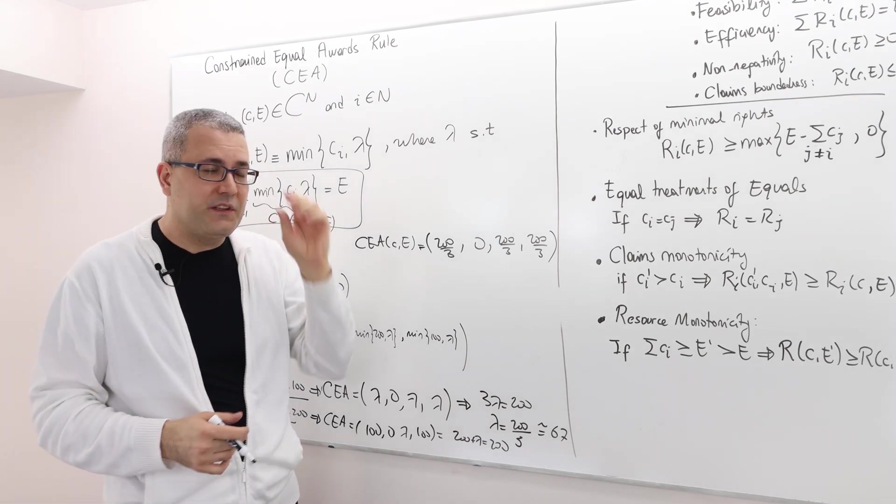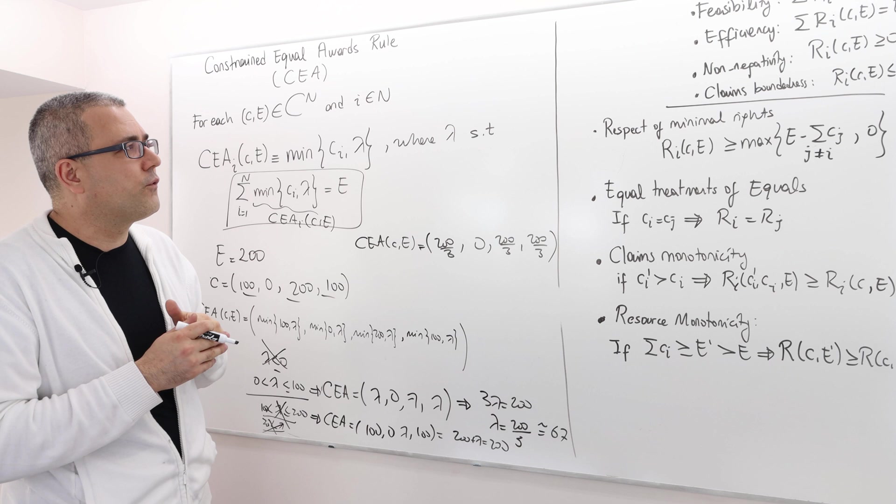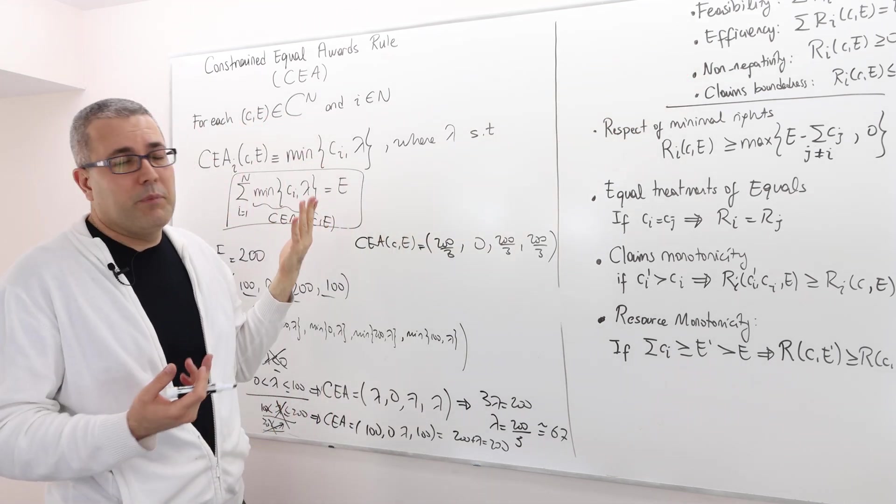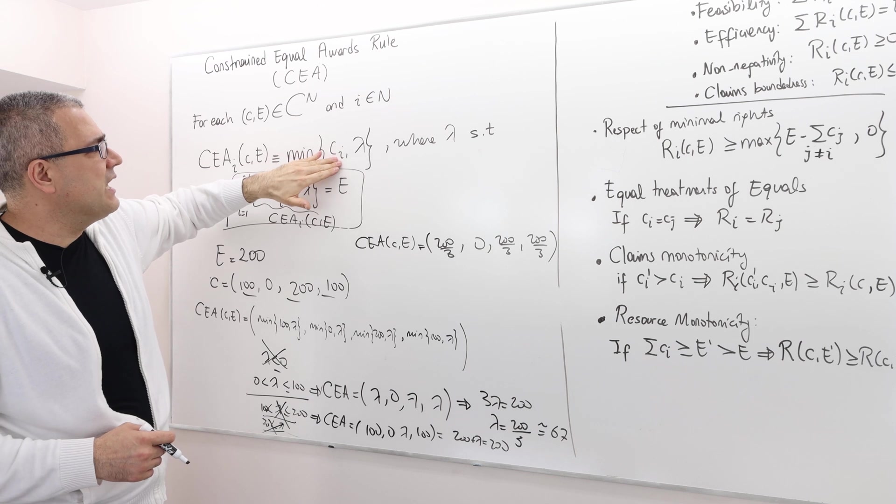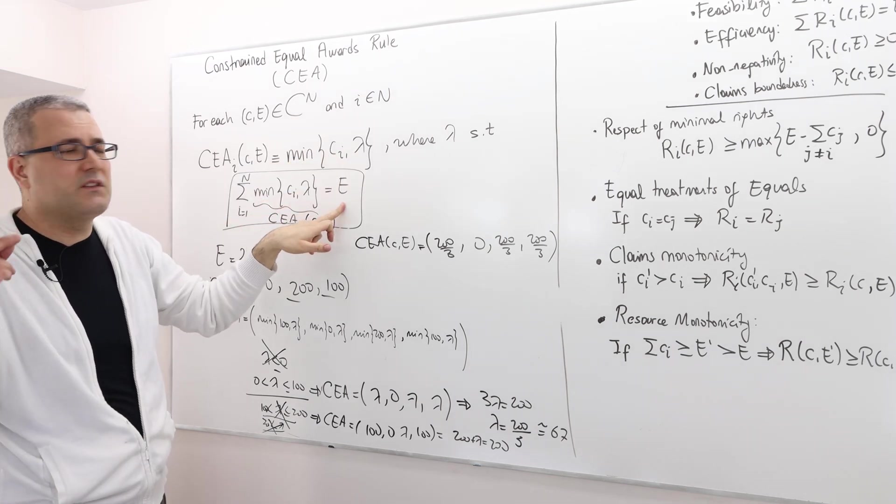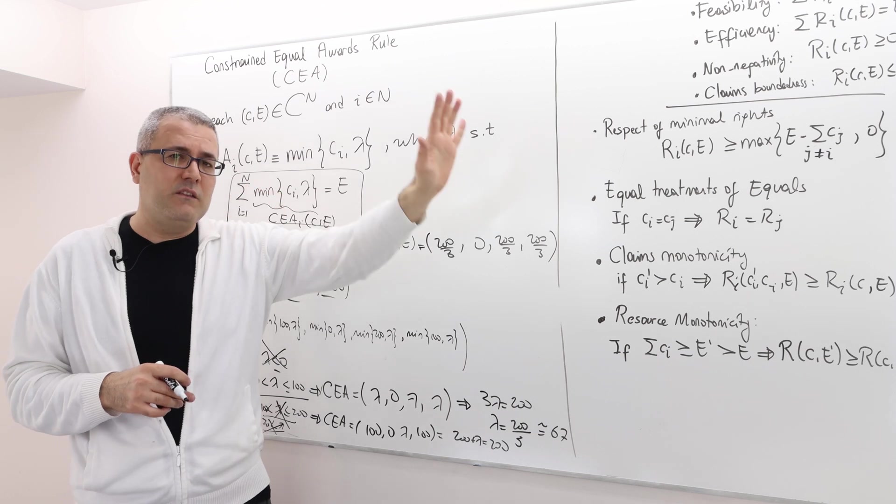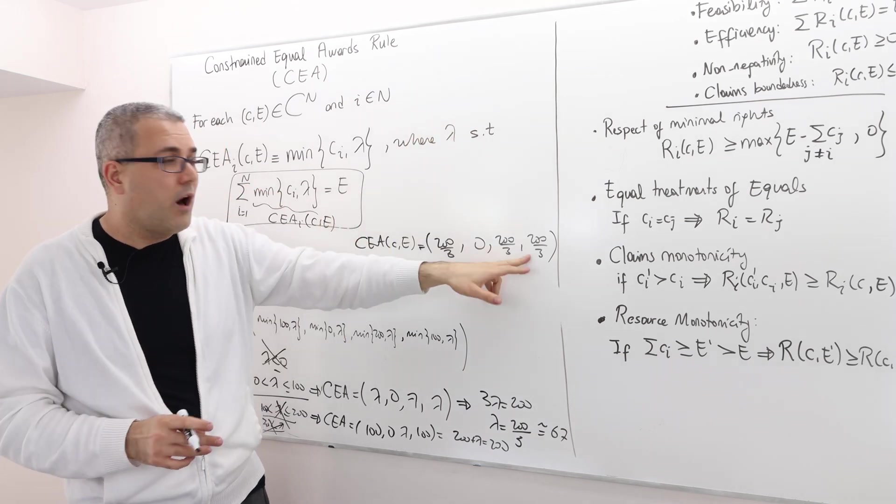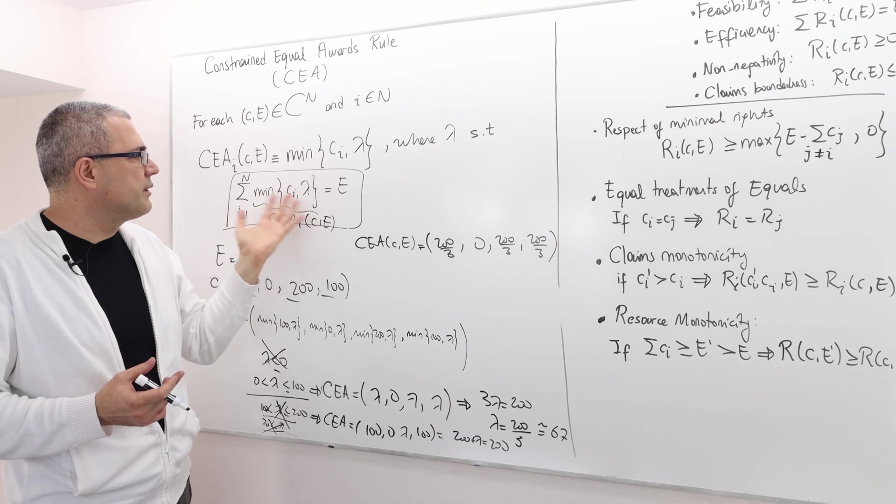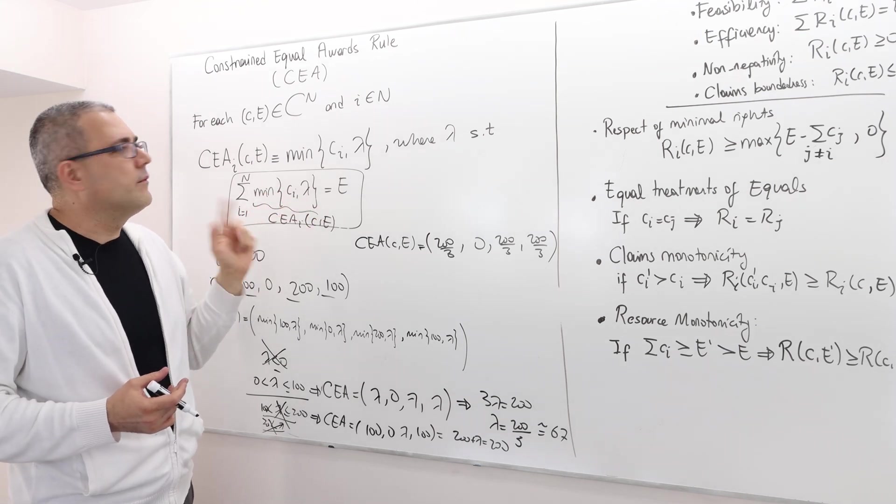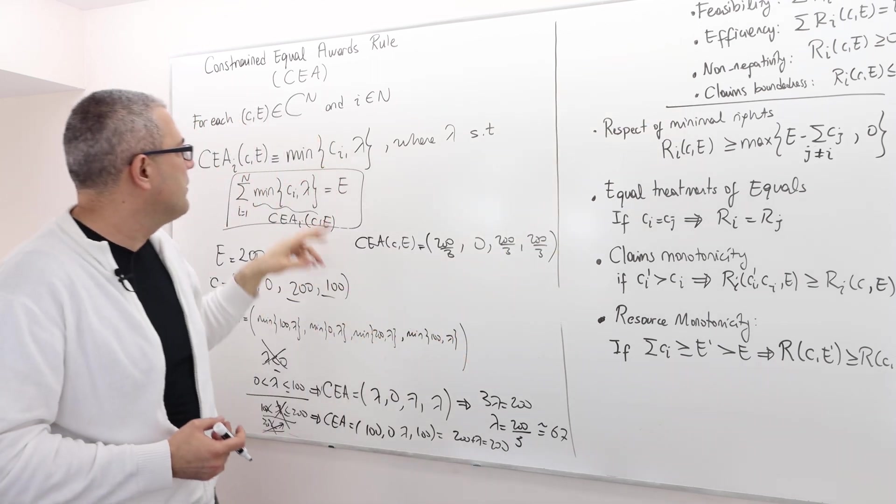When it comes to the properties for this rule, the constraint equal awards rule, I think it's very straightforward that it satisfies efficiency by definition. Non-negativity: obviously, each player is going to get the minimum of ci or some lambda term, and we know that lambda is a positive number. This lambda has nothing to do with proportional rule lambda, don't confuse them. Obviously, as you see, lambda here is not less than 1, but it's positive because no negative number is going to satisfy this. It satisfies non-negativity and claim boundedness because it's the minimum of these two, so it can be at most ci.